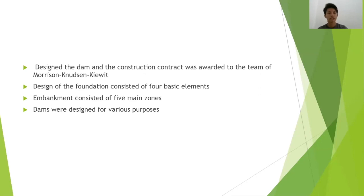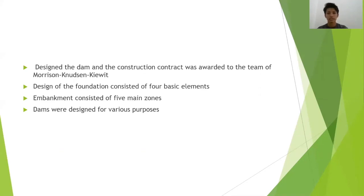The embankment itself consists of five main zones. Zone one was an impervious center core. Zone two was an overlaid zone extending downstream to provide layer control. Zone three was downstream, with its main function being to provide structural stability. Zone four consists of the storage area downstream for the control structure. Zone five was the rock fill in the outer part of the embankment. The dam was designed for various purposes such as hydroelectricity, irrigation, flood control, water supply, transport, navigation, and recreation.